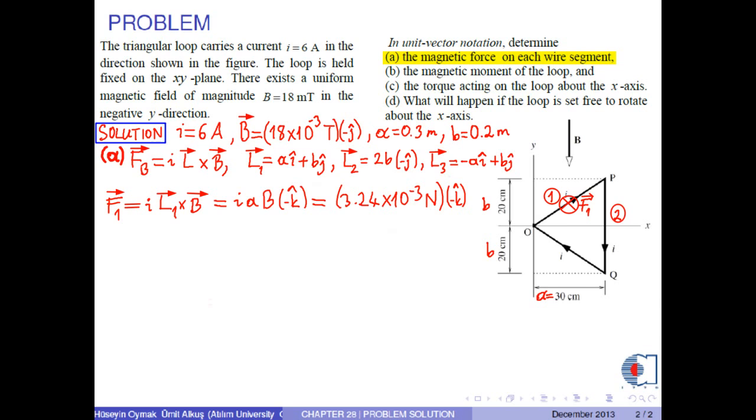For segment 2, since magnetic field is parallel to length vector L2, then because of the cross product, the magnetic force on segment 2 is just 0.